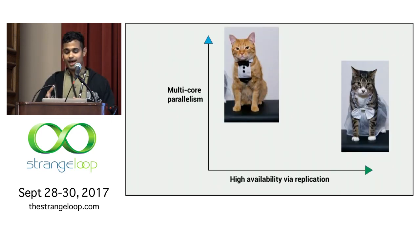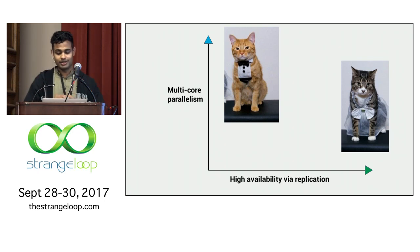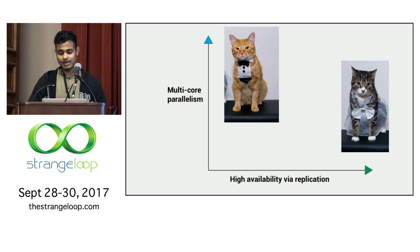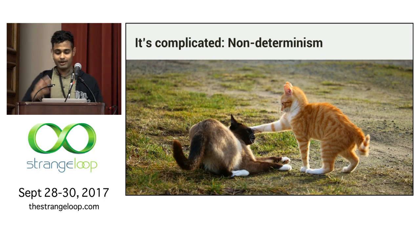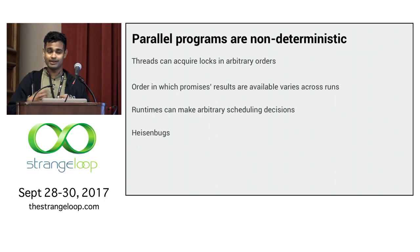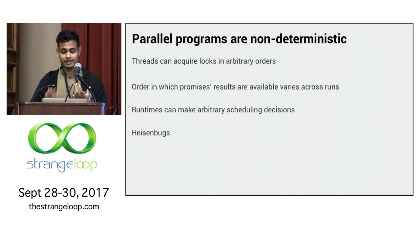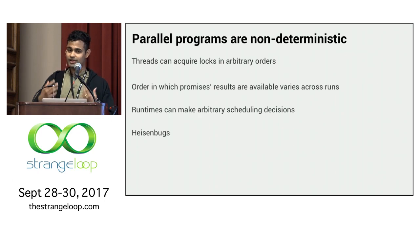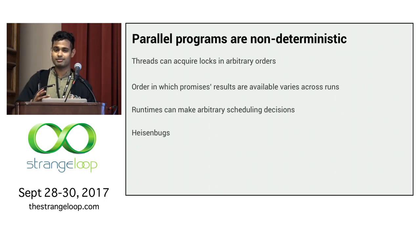It seems like it's easy to marry these two requirements, because they appear to be two completely orthogonal problems. We can get multicore parallelism by leveraging parallel programming abstractions and good synchronization mechanisms, and do replication by shipping logs around. Unfortunately, it turns out that marrying the two is complicated due to non-determinism. Parallel programs are non-deterministic — threads can acquire locks in arbitrary orders, and the order in which futures return results may vary across runs.